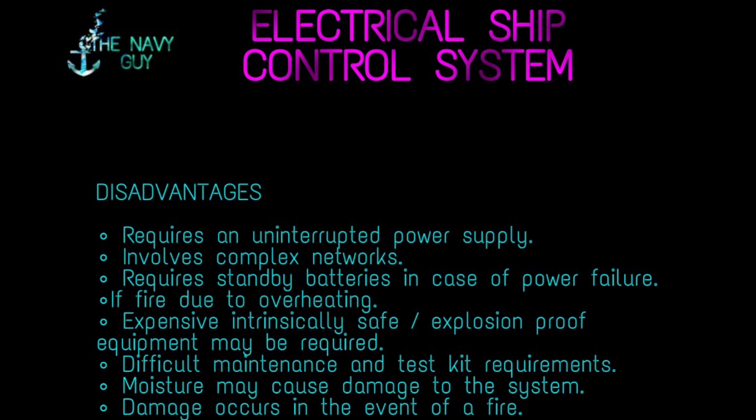Some disadvantages of the electrical ship control system are: the system requires an uninterrupted power supply with no voltage fluctuations; it involves complex networks; it requires standby batteries in case of power failure; there is a risk of fire due to overheating; expensive intrinsically safe, explosion-proof equipment may be required; maintenance is difficult with test kit requirements; moisture may cause damage to the system; and damage readily occurs in the event of a fire.